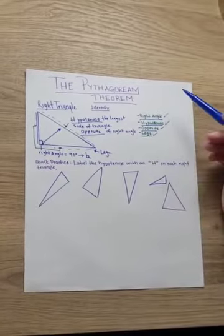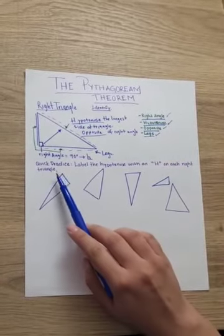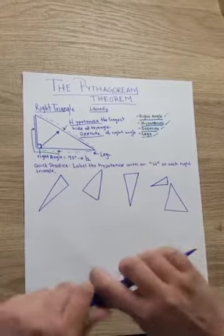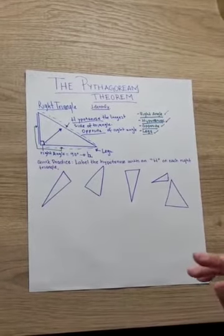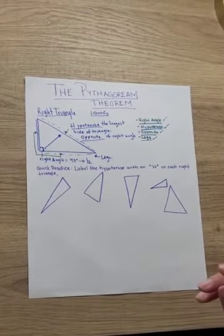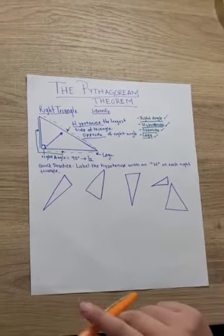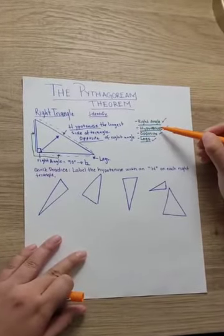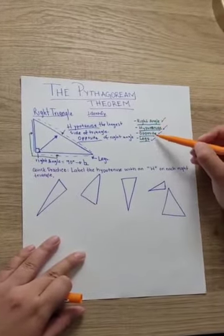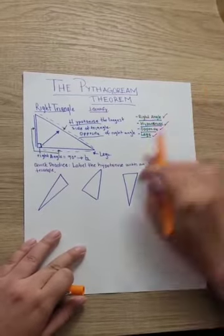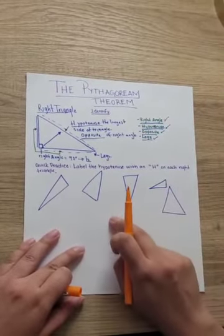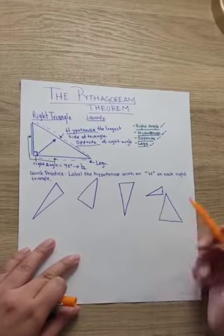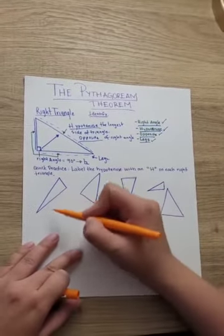Now we're going to do a quick practice. Let me change colors. Now that we know where the right angle is, where the hypotenuse is, and what the legs are, we're going to identify the hypotenuse on these five triangles. Let's start with the first one.